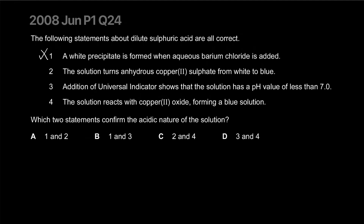The solution turns anhydrous copper sulfate from white to blue — that's probably not even the sulfuric acid doing anything, it's just the water in the acid, so that's not about sulfuric acid being acidic. Addition of universal indicator shows the solution has a pH value of less than 7 — that's definitely talking about it being an acid. The solution reacts with copper oxide forming a blue solution — that's also true because copper oxide is basic and acids readily react with bases. So the answer is three and four — that's option D.